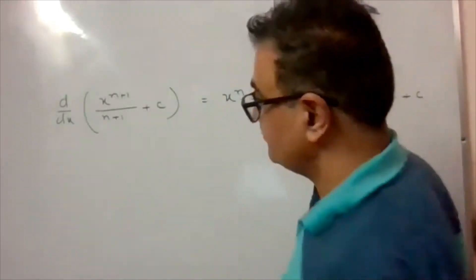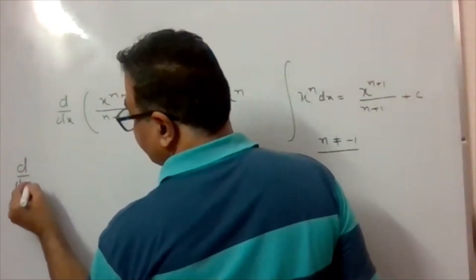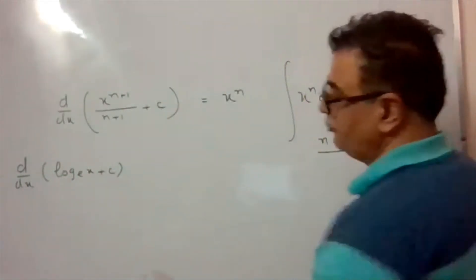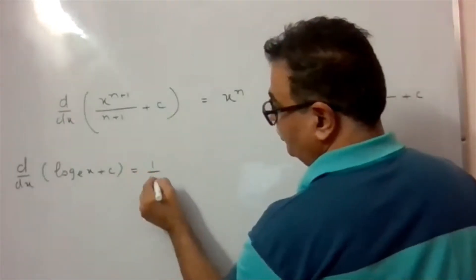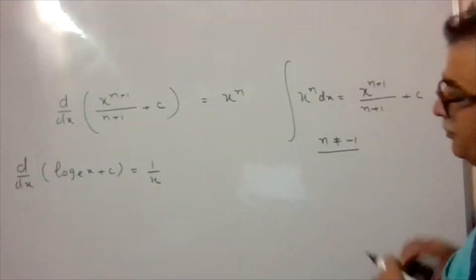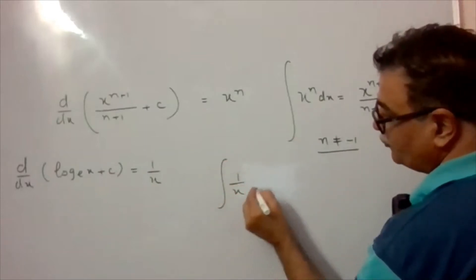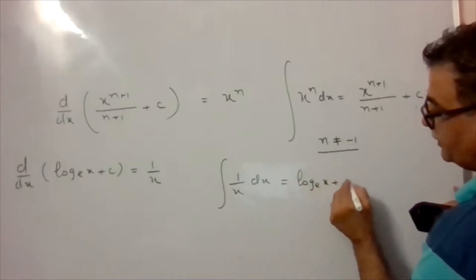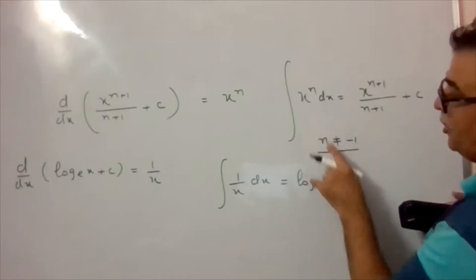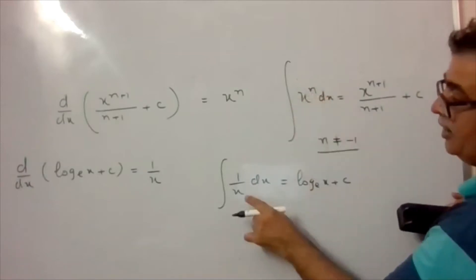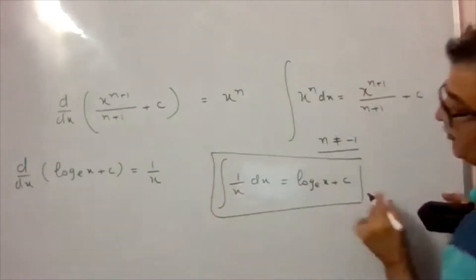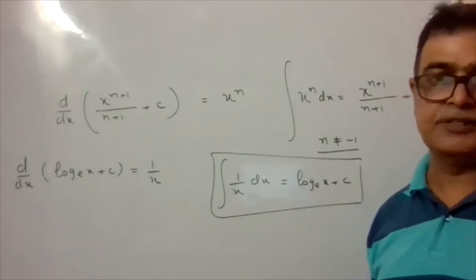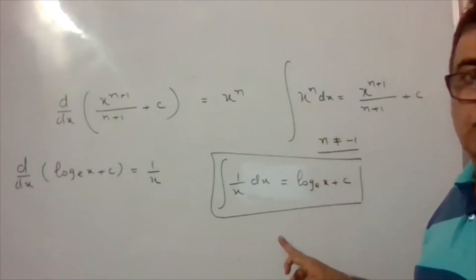Second result: d/dx of log x = 1/x. Therefore, integration of 1/x dx = log x + C. This resolves the problem where n = -1 (i.e., x^(-1) = 1/x) couldn't be handled by the first formula. Whenever 1/x appears, the integration formula gives log x + C.